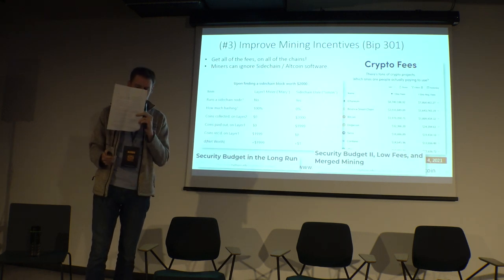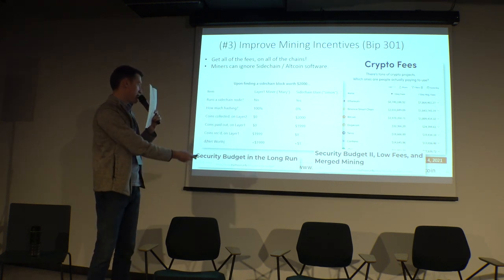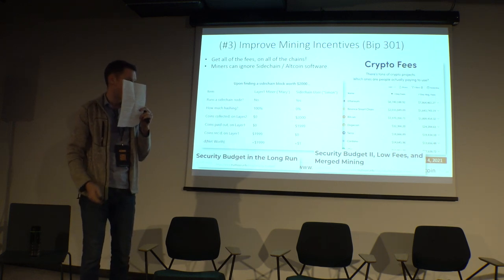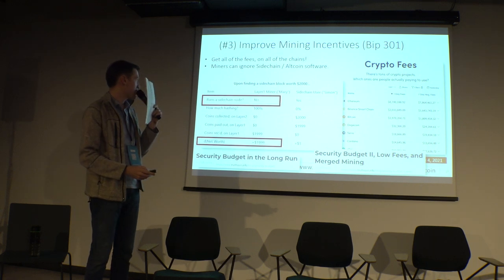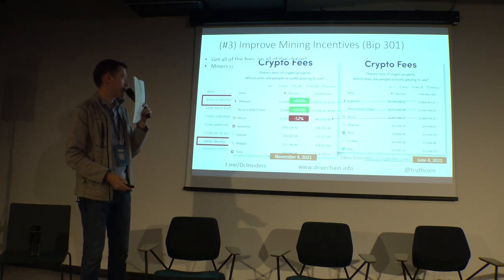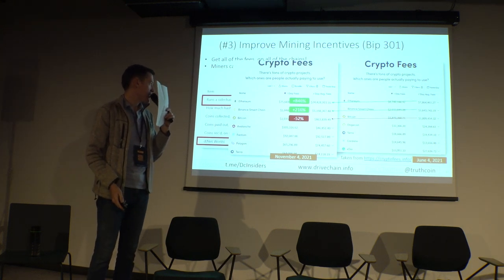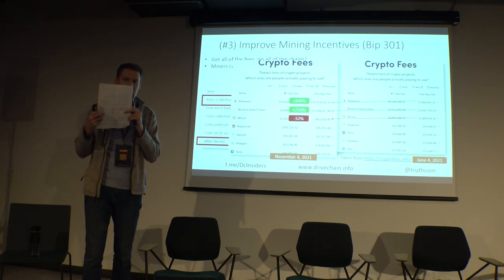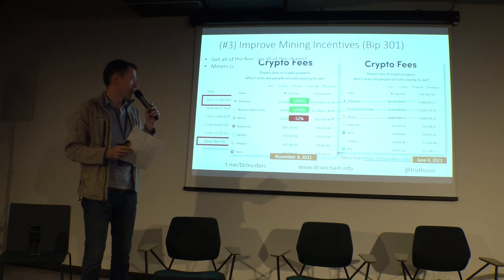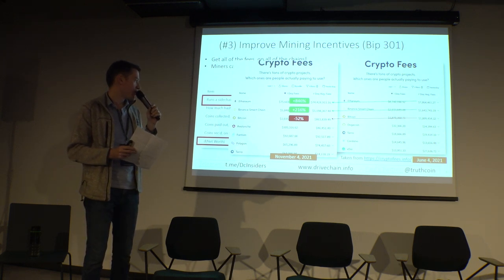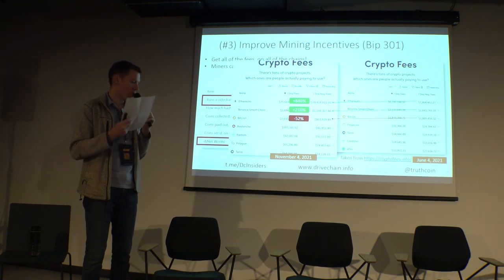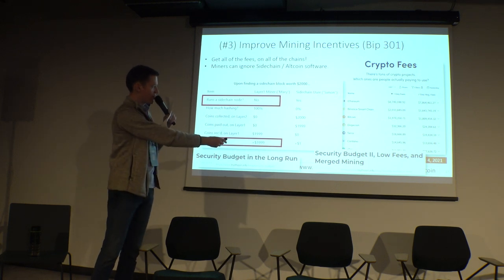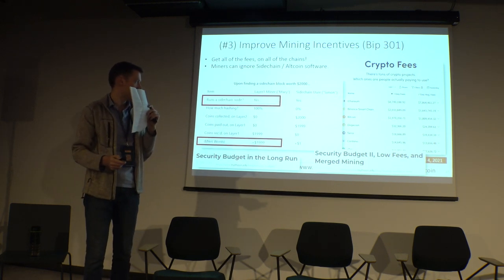The third aspect I'll do very quickly: I've written two posts about the so-called security budget, where Bitcoin doesn't have a lot of paying customers. The competing coins have many, many people paying a lot of money in aggregate transaction fees, but on Bitcoin the fees are still very low. If you want to learn what this might imply for Bitcoin, I recommend reading my article 'Security Budget 2: Low Fees and Merged Mining.'